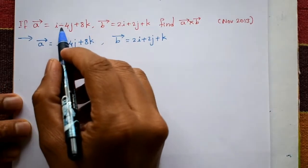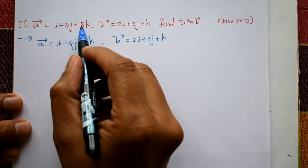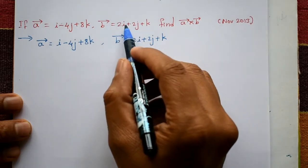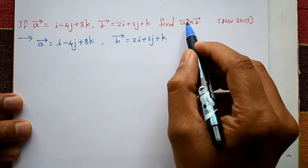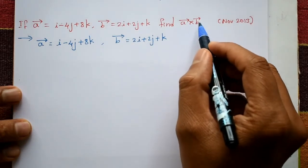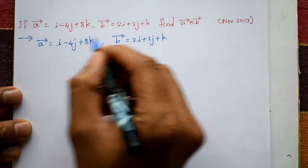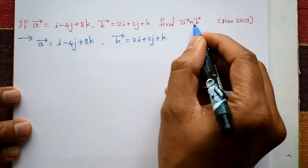If vector a is i minus 4j plus 8k, vector b is 2i plus 2j plus k, find vector a cross vector b. Okay, and this is vector a and this is vector b. A cross b means taking the determinant.